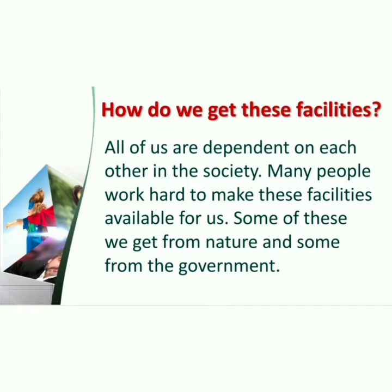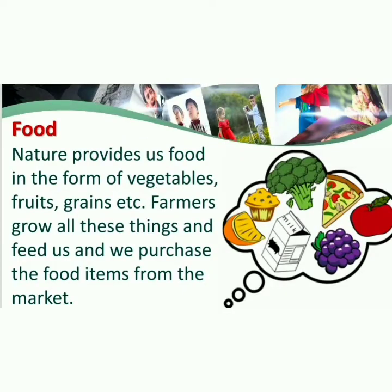Now we know what are the essential things or facilities. But how do we get these facilities? All of us are dependent on each other in society. Many people work hard to make these facilities available for us. Some of these we get from nature and some from the government. Food is the basic necessity for life. Nature provides us food in the form of vegetables, fruits, grains, etc. Farmers grow all these things and feed us, and we purchase food items from the market.